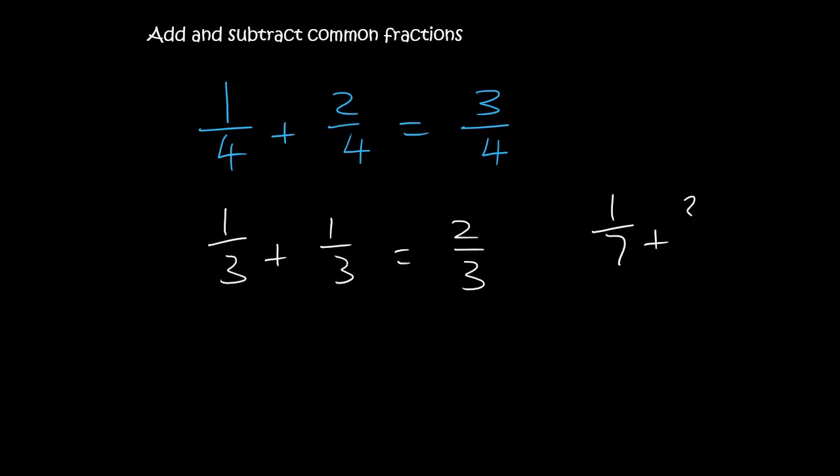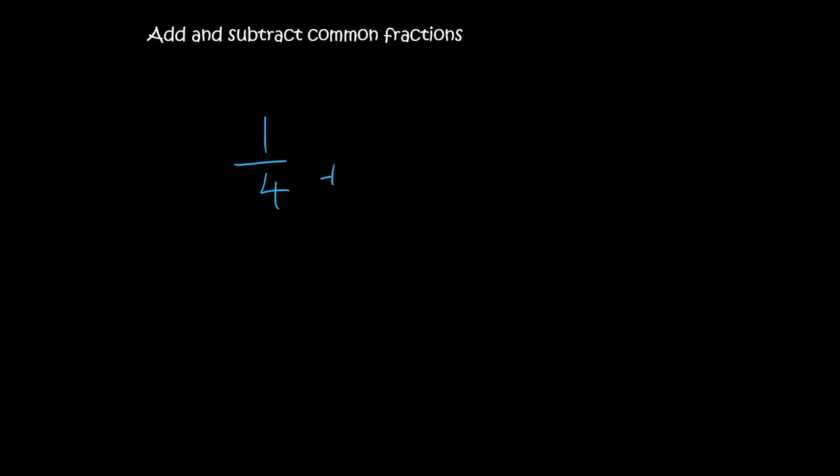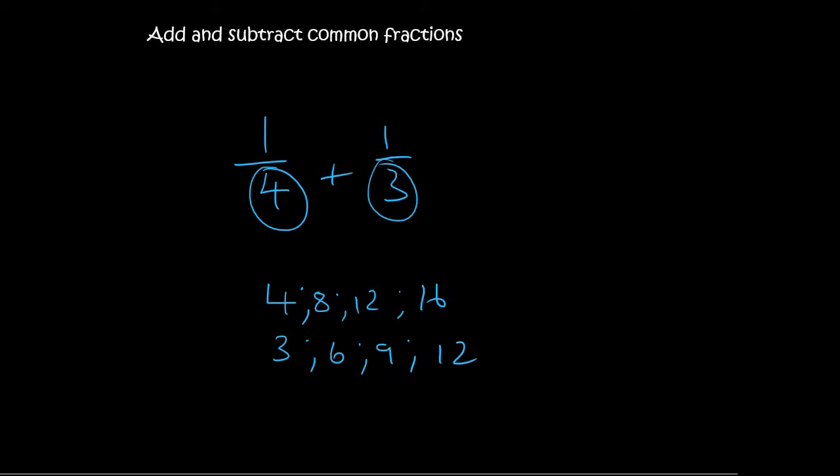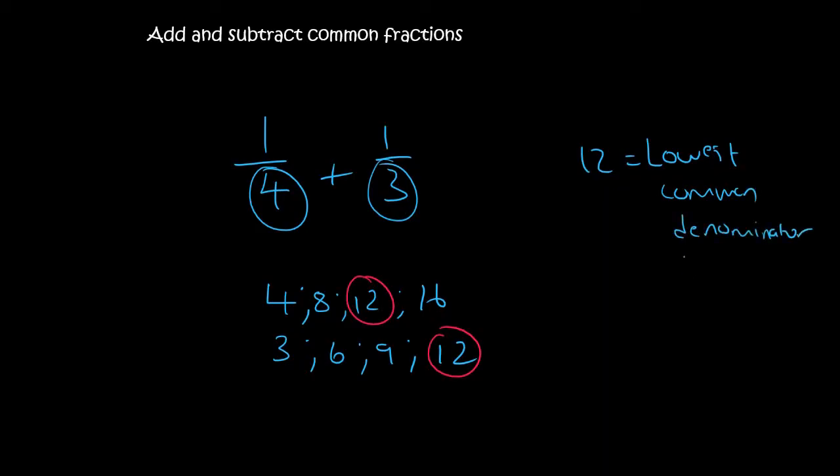1 over 7 plus 3 over 7 gives you 4 over 7. If you get 1 over 4 plus 1 over 3, now please remember to make these two numbers the same. If you struggle with that in the test, all you do is you count in 4s: 4, 8, 12, 16. And then you count in 3s: 3, 6, 9, 12. You then realize these two numbers are the same, and so I will use 12 as my lowest common denominator, sometimes referred to as the LCD.